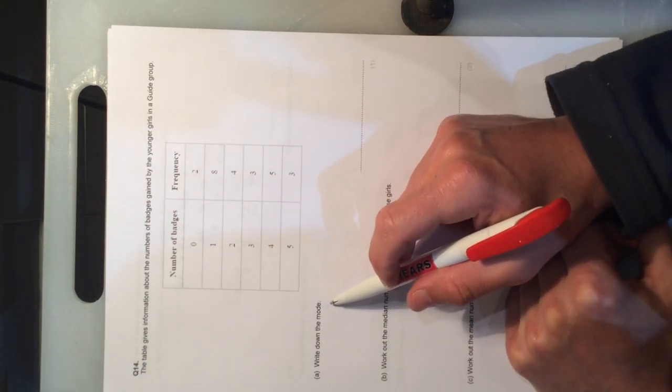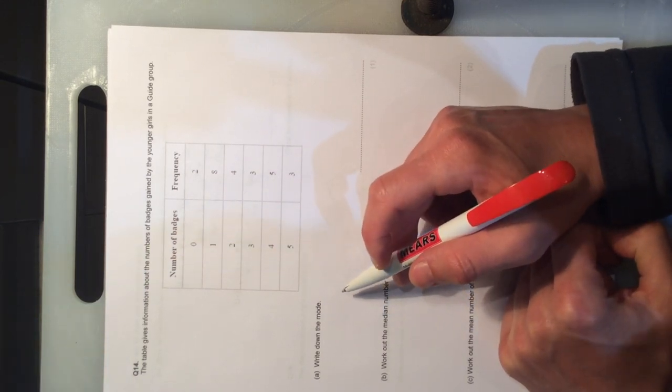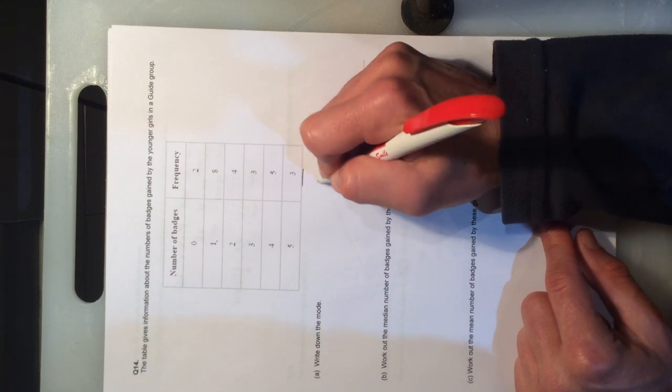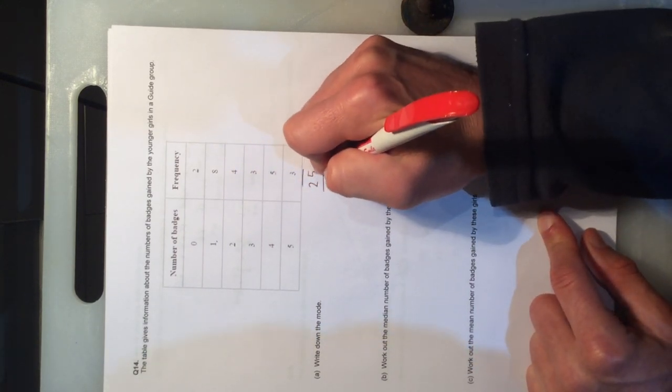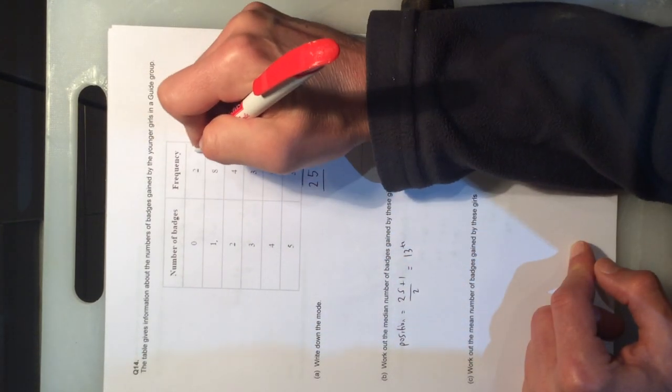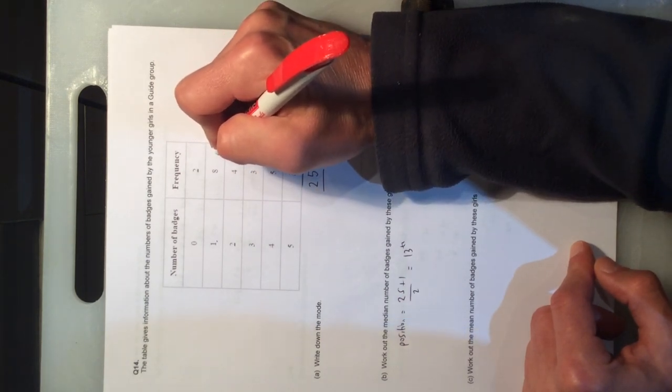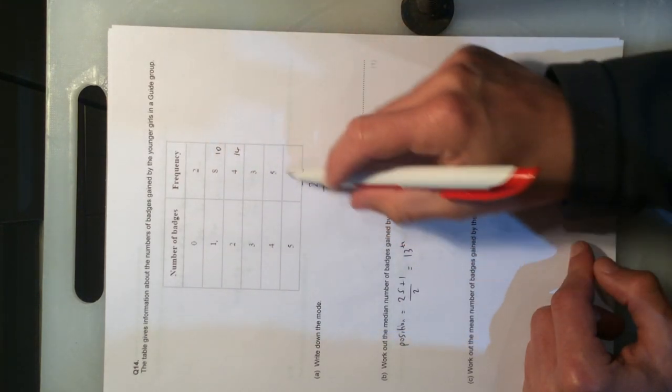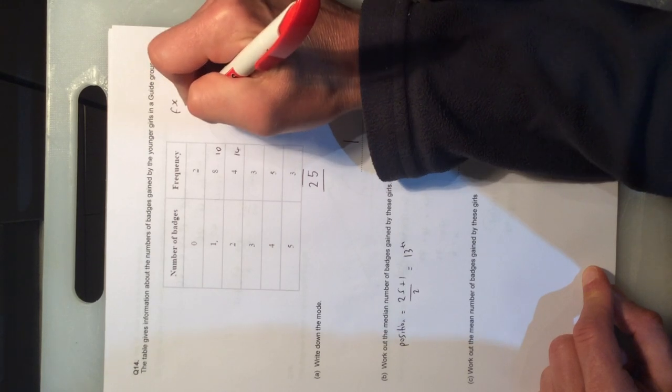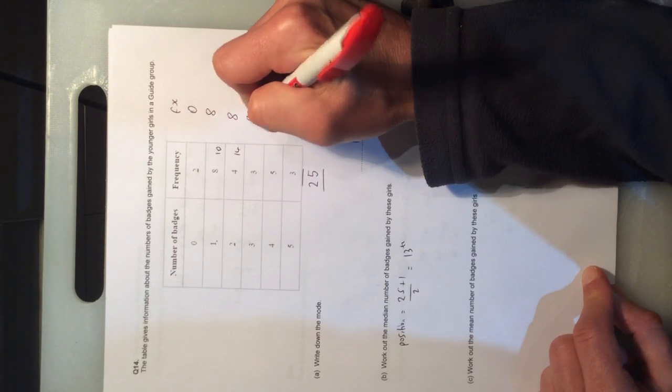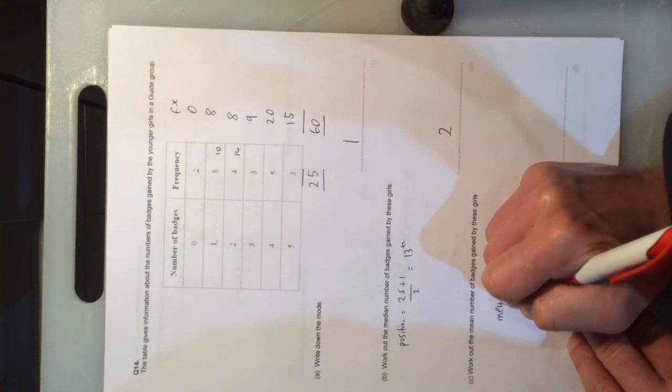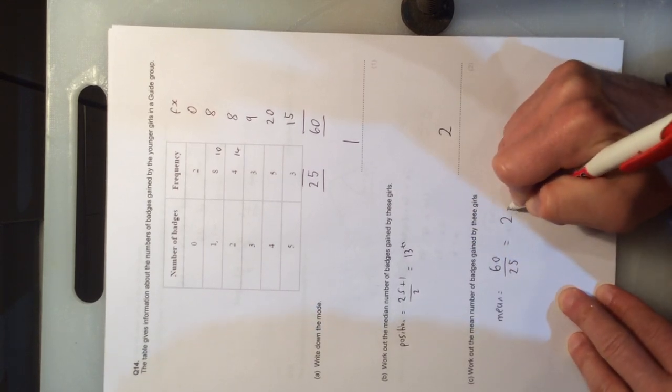The mode for question 14 is the most commonly occurring number of badges that have been gained. The highest frequency is 8, so 1 badge is the mode. The median. Well, if we add up the number of girls in this survey, we get 25. The position of the median is 25, add 1, divide by 2, which gives us the 13th position. Two girls have 0 badges. Another 8 have 1 badge. That takes me up to 10. Adding on the extra 4 is 14. So the 13th girl would have 2 badges. The median is 2. The mean, we want to work out an fx column. This is multiplying to work out the total number of badges. When we add up that fx column, we get to a total of 60. So the mean is going to be equal to 60 divided by the number of girls, which is 25. And when we do that, we get the answer 2.4.